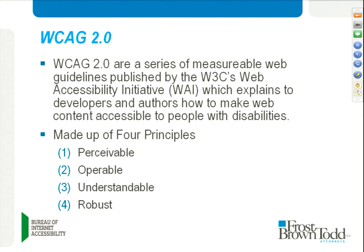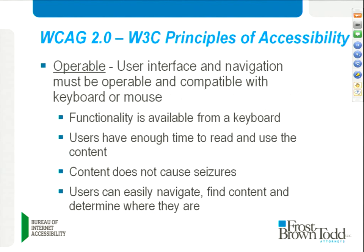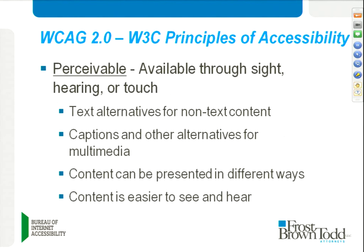The WCAG2 guidelines from the World Wide Web Consortium are used globally and are a series of measurable web guidelines separated into four principles. First, Perceivable: anything available on your website through sight, hearing, or touch. For example, images need alternative text, links need proper labeling, videos need closed captioning, and content must be presented in ways that are easier to see and hear. Second, Operable: user interface and navigation must be operable — this addresses keyboard-only use, tabbing through a website, and ensuring content does not cause seizures.